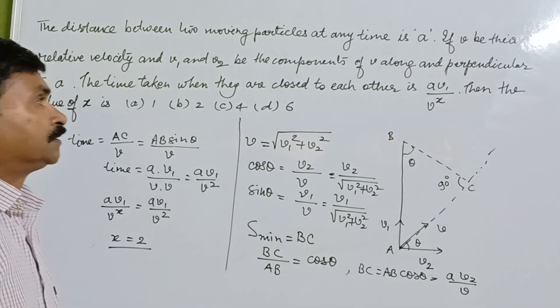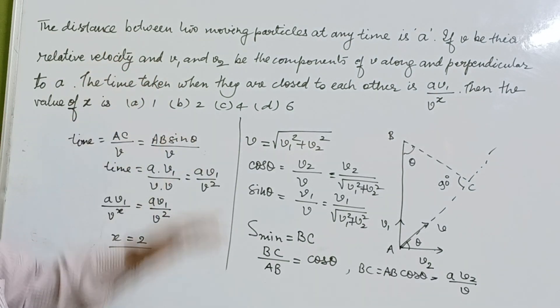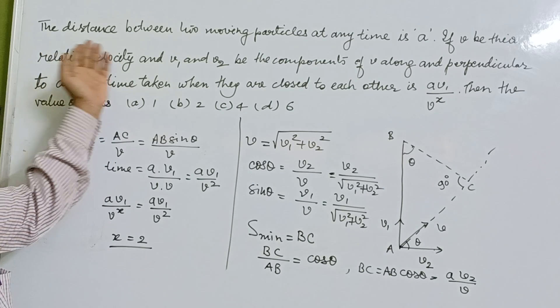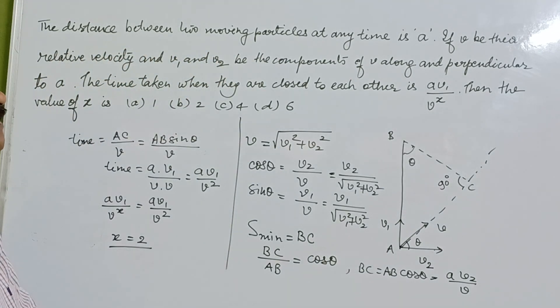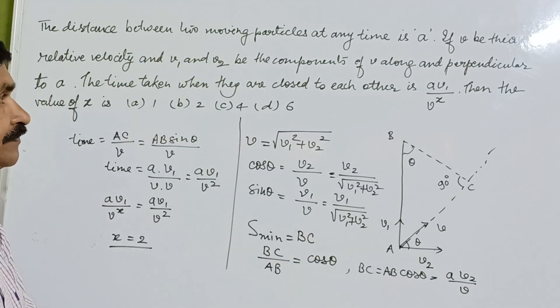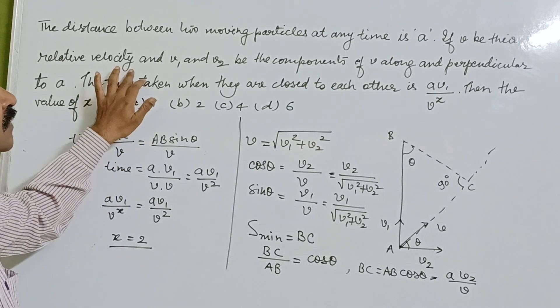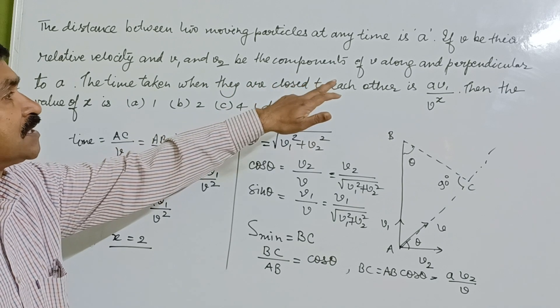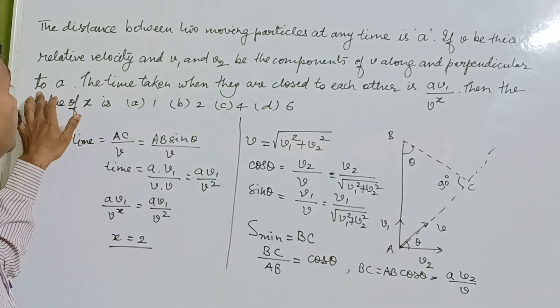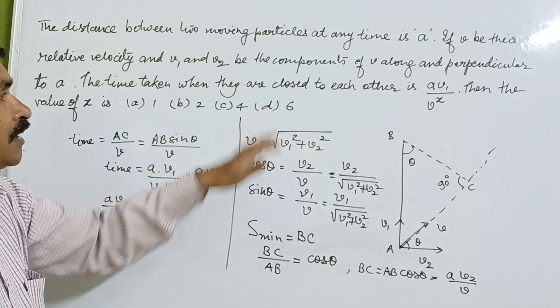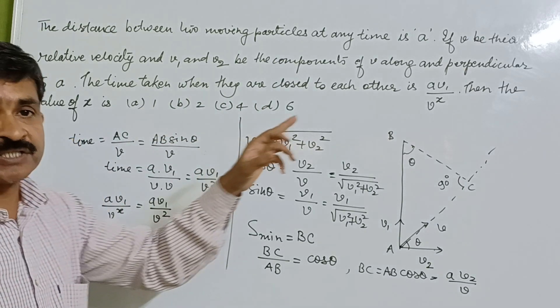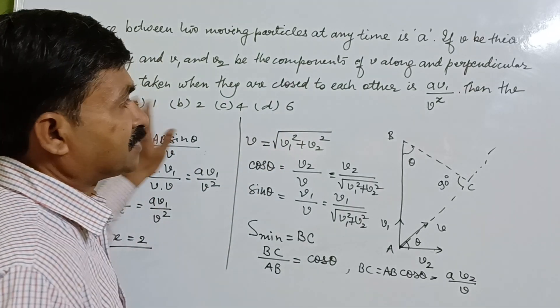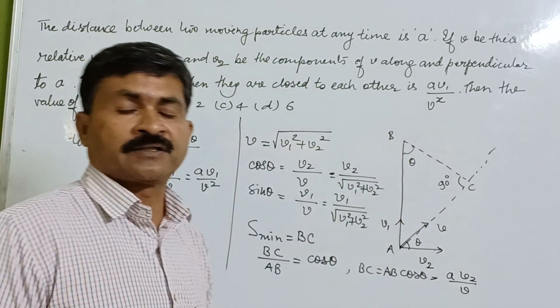Yes students, in the series of Numerical Physics, we have a question which is like this. The distance between two moving particles at any time is A. If V be the relative velocity and V1 and V2 be the components of V along and perpendicular to A, the time taken when they are closest to each other is A V1 upon V raised to the power X. Then the value of X is—we have to determine the value of X.